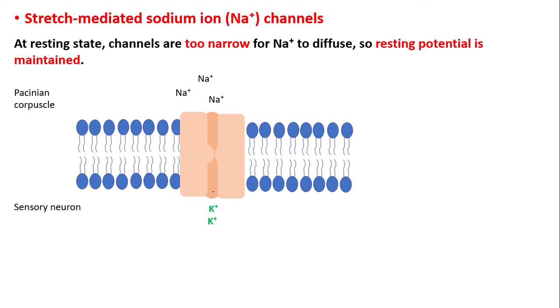We will cover this more when we talk about nerve impulses in the next video. You may be wondering: if potassium ions have a positive charge, then why is the resting potential a negative charge? The reason is that when potassium ions are transported into the sensory neuron to maintain resting potential, this creates a concentration gradient, which means that the potassium ions can then be transported back out into the Pacinian corpuscle, maintaining that negative resting potential.